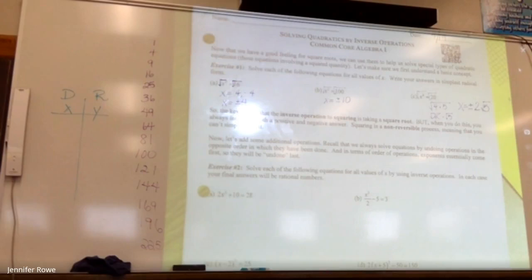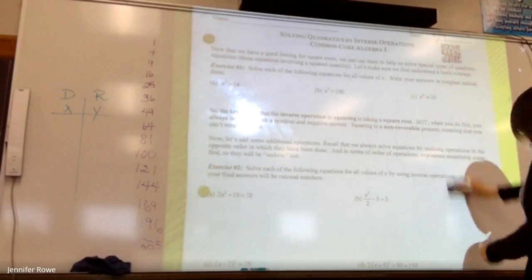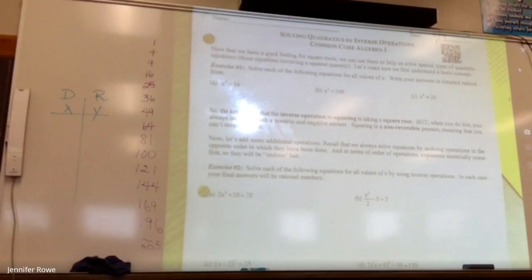So the key here is that the inverse operation to squaring is taking a square root. But when you do this, you always introduce both the positive and the negative answer. Squaring is a non-reversible process, meaning that you can't simply undo it. Now let's look at some additional operations. Recall that we will always solve equations by undoing operations in the opposite order. Exponents essentially come first, so they will be undone last. In other words, the last thing you do is take the square root. Everything else gets handled first.